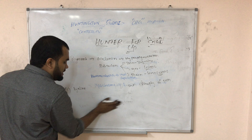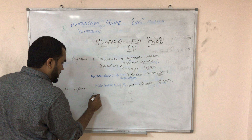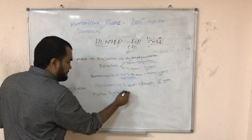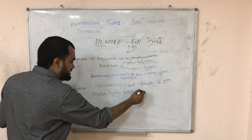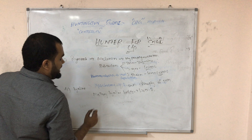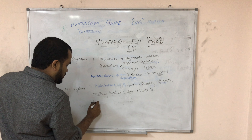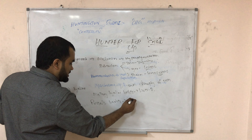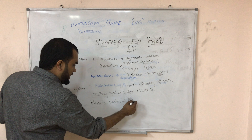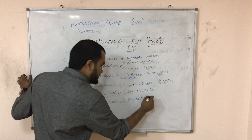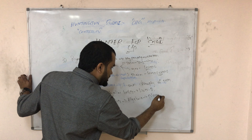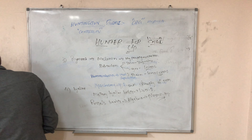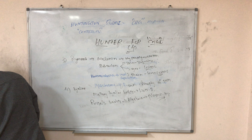Some people can have hyaline deposition. Hyaline cast indicates liver problems and these are called Mallory hyaline bodies, seen in liver disease. There are also Russell bodies, which are seen when plasmacytes are affected in myeloma.